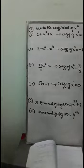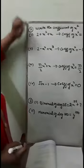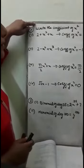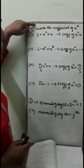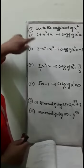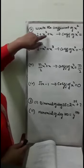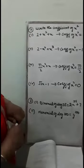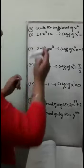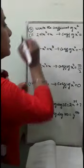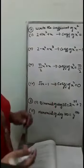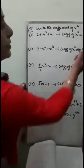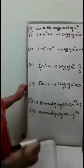In sum number 2, you are asked to write the coefficient of x squared in every statement. In the first part, the expression is 2 plus x squared plus x. The coefficient of x squared — when there is no number written with x squared, the coefficient is understood to be 1.